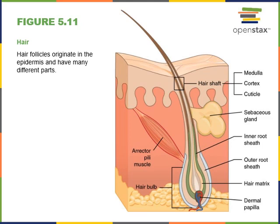The functions of hair include protection, sensory input, thermoregulation, and communication. For example, hair on the head can protect the skull and the top of the head from sun exposure. Hair in the nose, ears, and around the eyes helps protect the body by keeping small particles from getting into these openings. Hair of the eyebrows helps prevent sweat from getting into the eyes. The sensory function involves a hair follicle receptor that can detect movement of the hair.